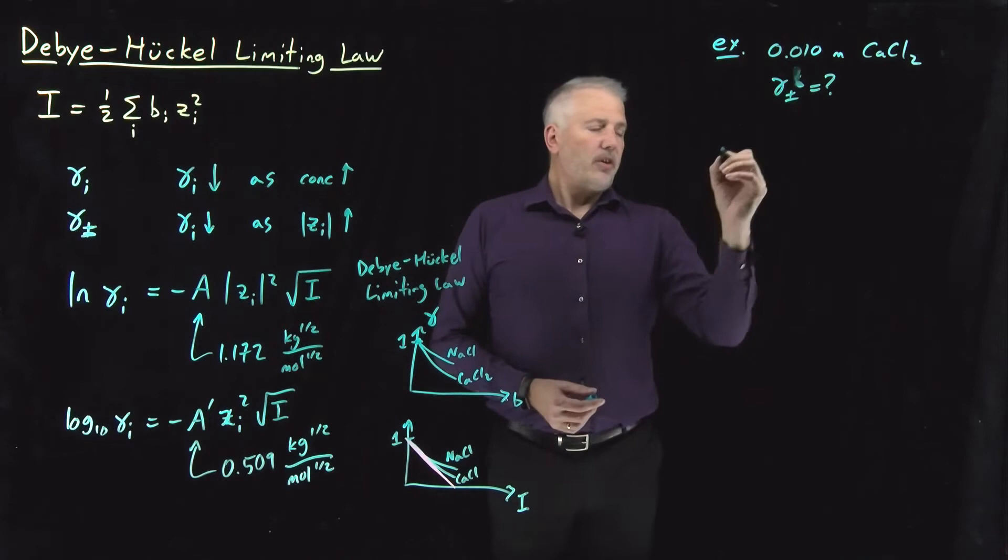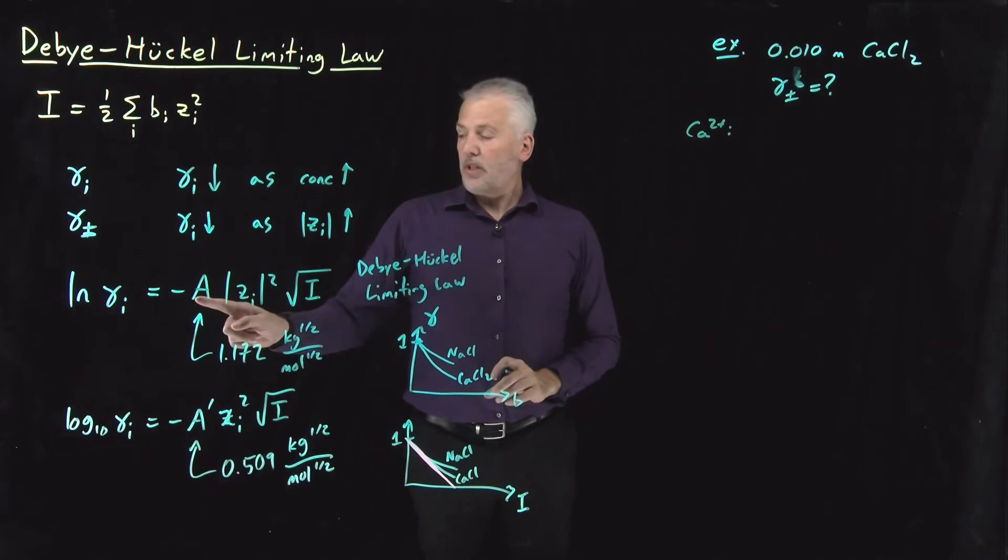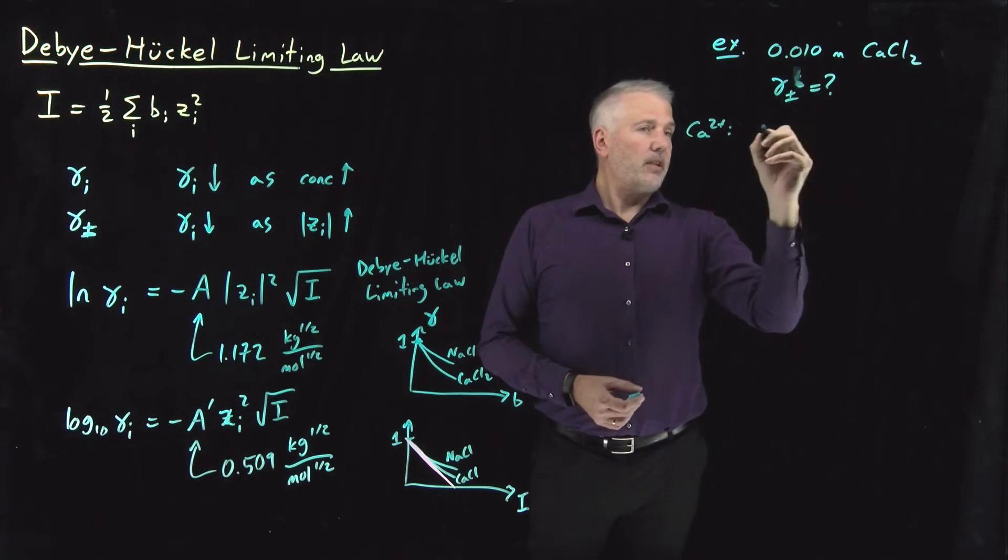So let's say for the cation first, for calcium. In order to calculate the activity coefficient for calcium, we need to know this constant, we need to know the charge on the calcium ion, which is two, and we need to know the ionic strength. So for both calcium and for chloride, the ionic strength is going to be